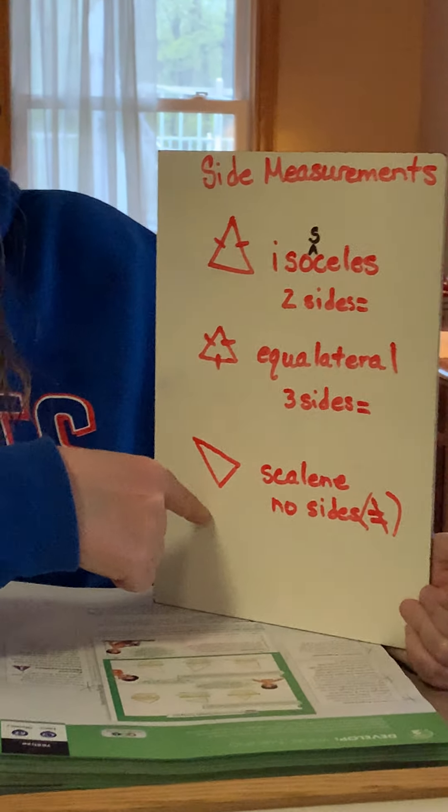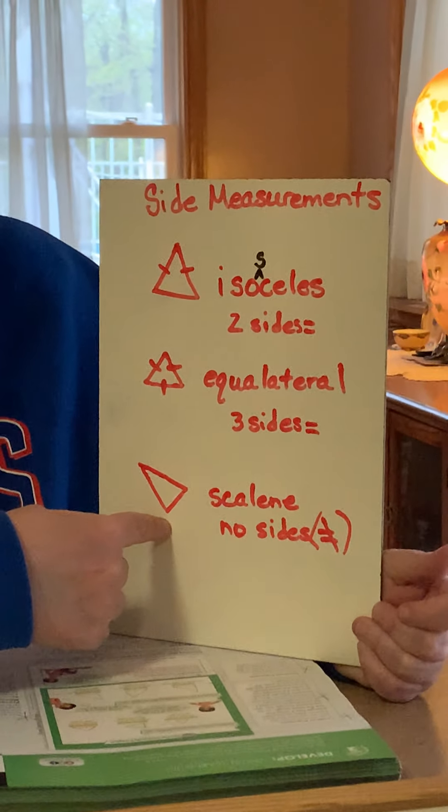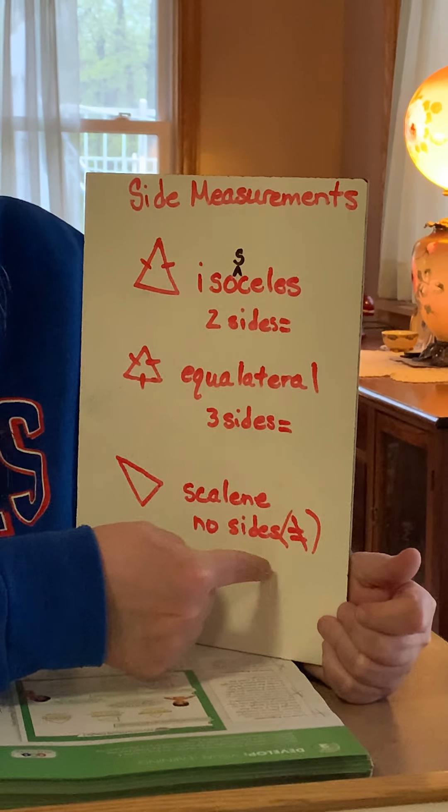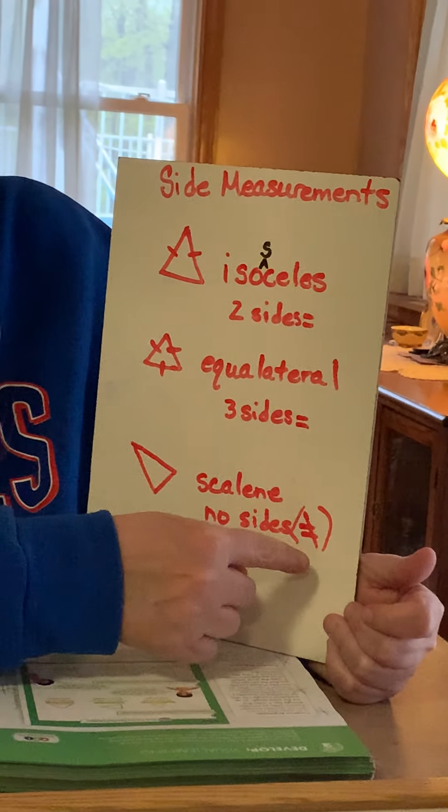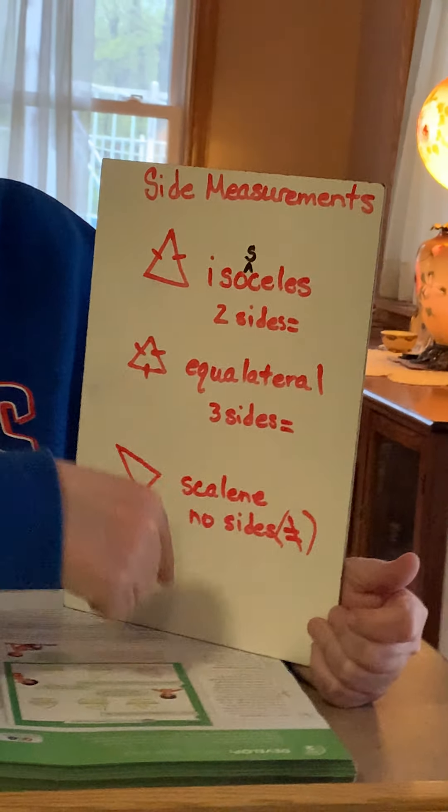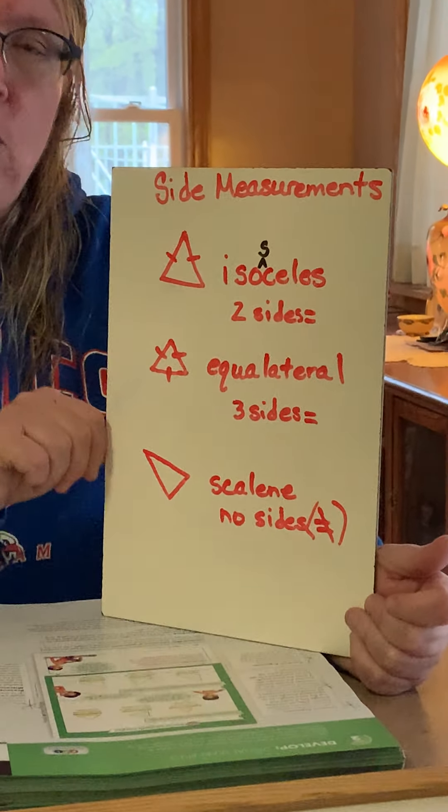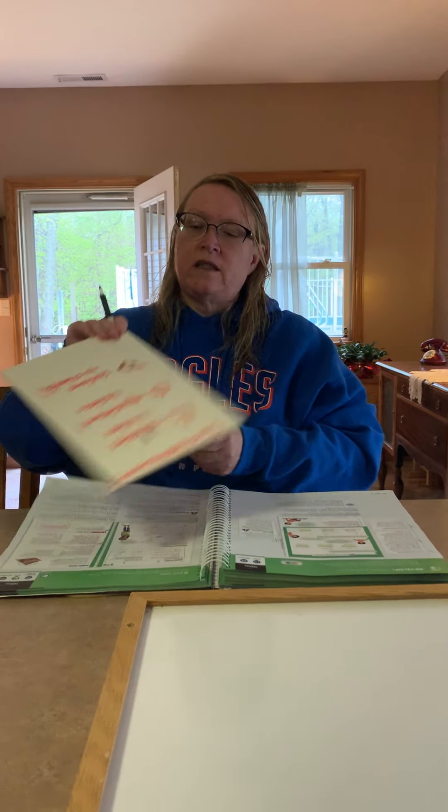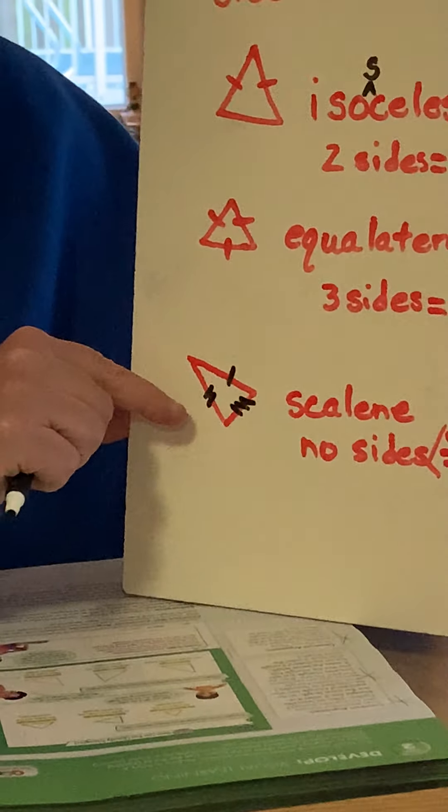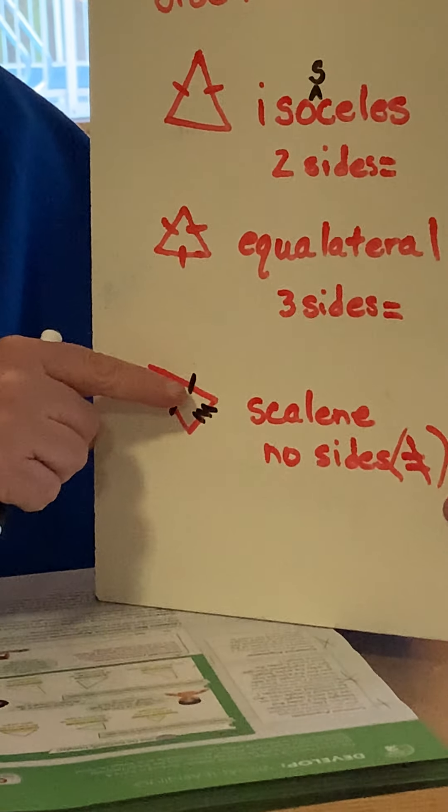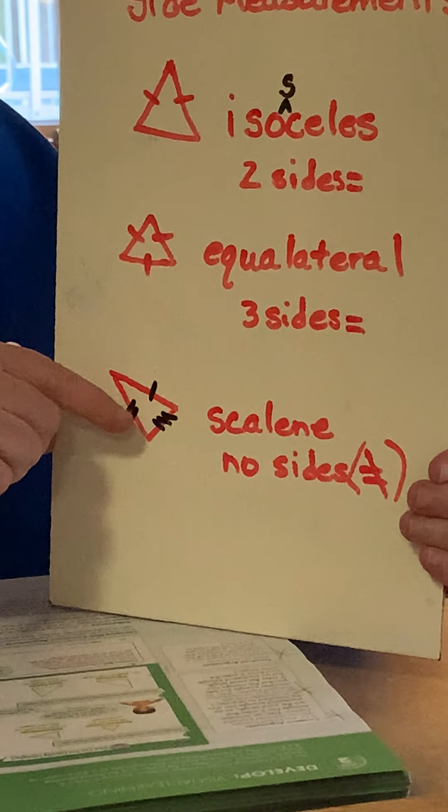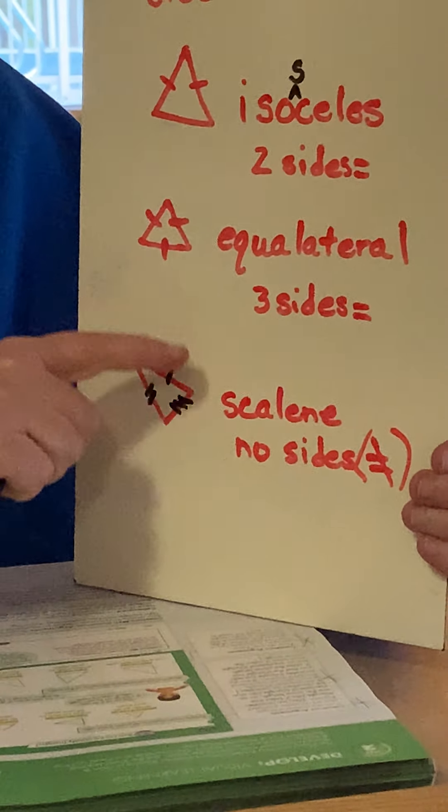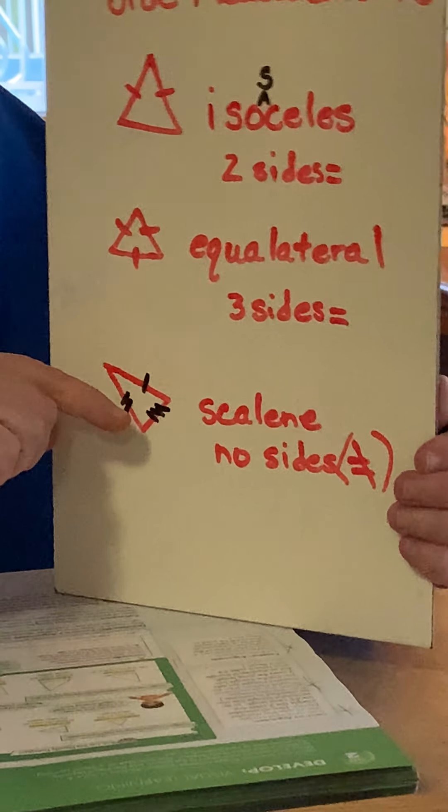And then the last one would be a scalene triangle, and no sides are equal. That's why I have the equal sign with a line through it. None of them are equal. They're all going to be three different measurements. And what it might look like, let me show you with the symbols. It might be that that one is the same, and that one equals something else. So you might see those kind of lines on it where it says this is one side measurement, this is another that is not equal, and this is a third new one. So that would be a scalene triangle.